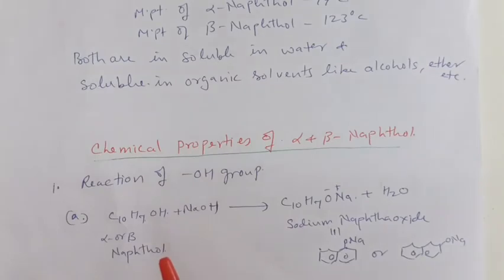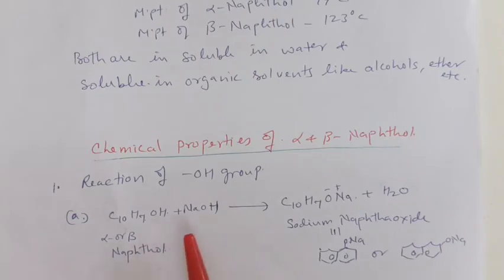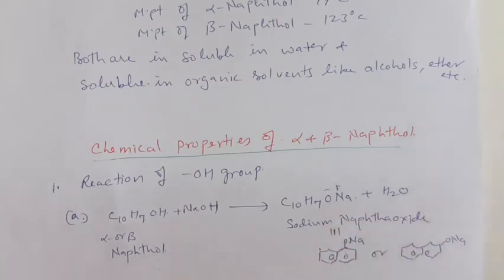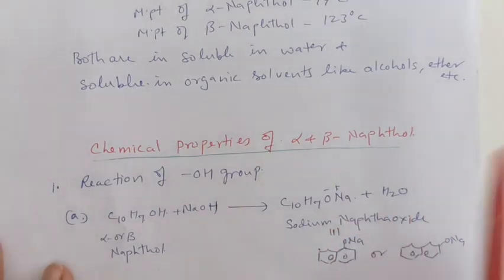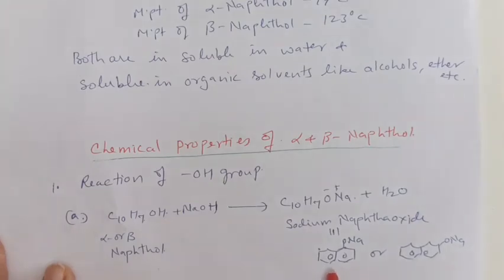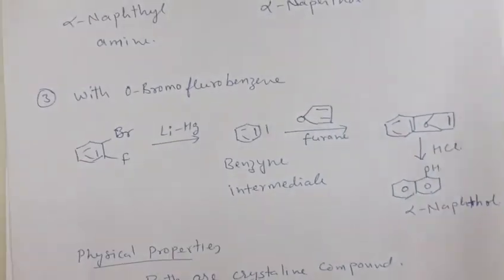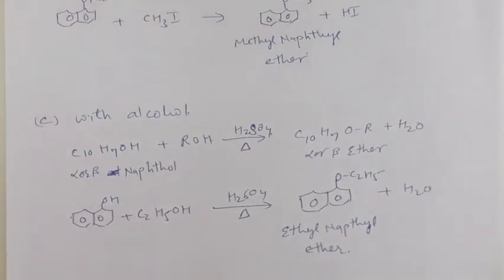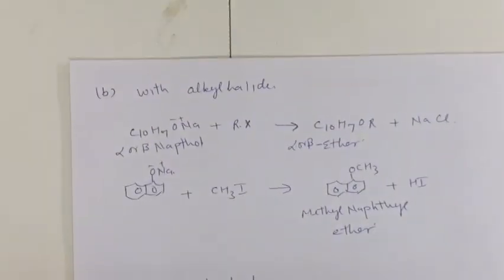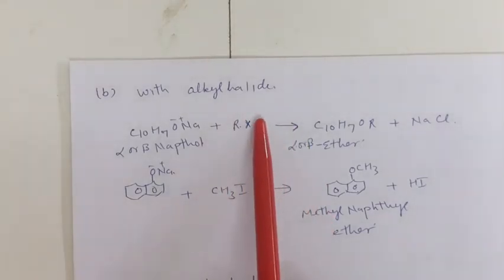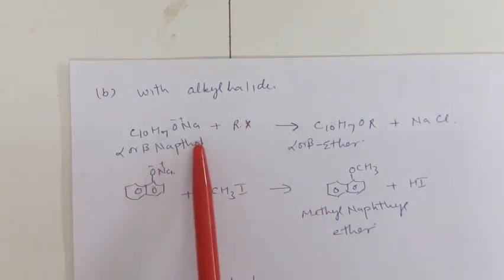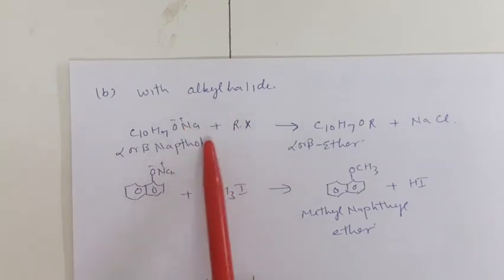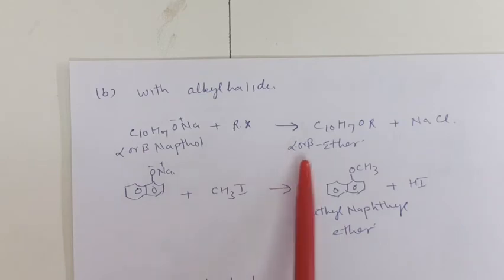Their chemical properties are as follows. They have an OH group, so they have the properties of the OH group. If alpha or beta naphthol reacts with sodium hydroxide, they give the sodium salt, that is sodium naphthoxide, and a water molecule is eliminated. If we take alpha naphthol we get alpha sodium naphthoxide; if we take beta naphthol we get beta sodium naphthoxide. If it reacts with alkyl halide, the sodium salt eliminates NaCl and gives the ether.